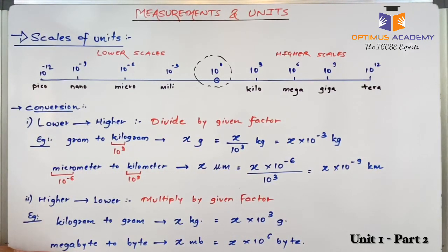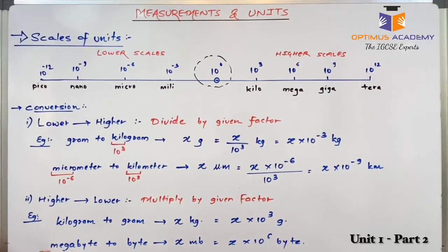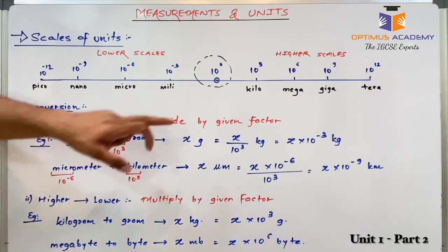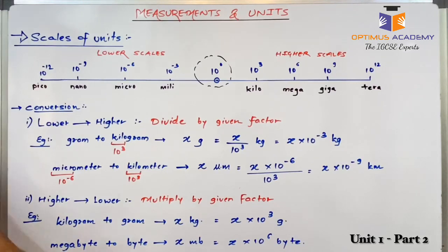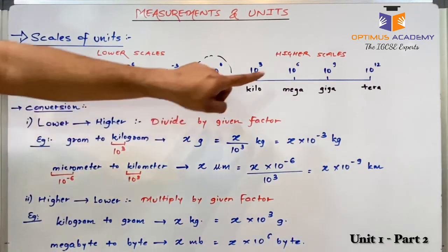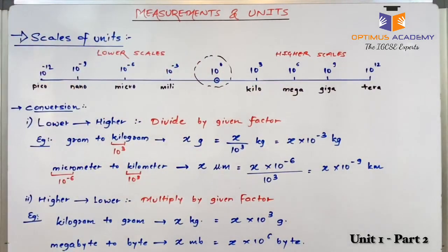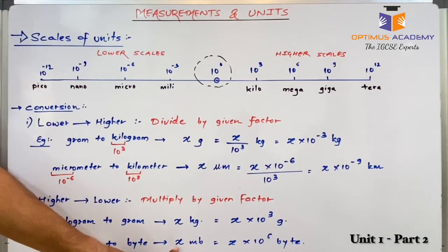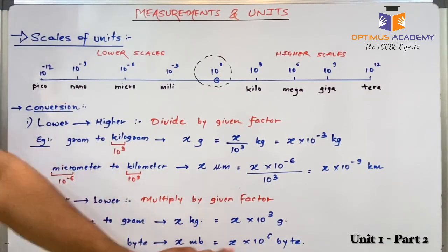Suppose I want to convert megabyte to byte. As I said, whenever no prefix is used, it is the standard reference — so byte is my standard reference. Mega has the factor 10 raised to 6. So to convert megabyte to byte, I multiply the number by 10 raised to 6.